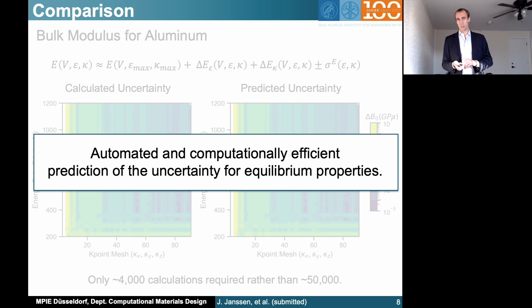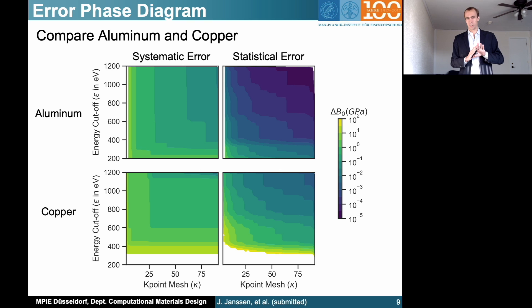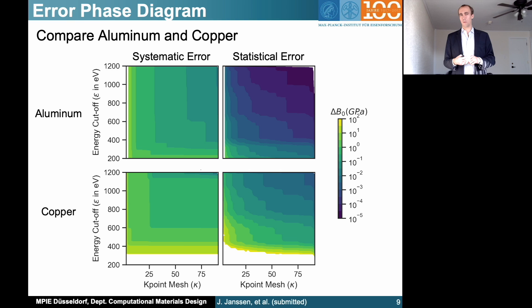With this, we can now start and compare different elements. Rather than looking at individual features of the uncertainty landscape, we're more interested in the convex hull — as shown here for aluminium. For aluminium, for example, the systematic error is always about an order of magnitude larger than the statistical error, so the separation works very nicely. In contrast, for copper, the statistical error and the systematic error are really on the same order of magnitude. We can combine those two in an error phase diagram.